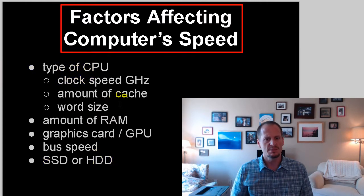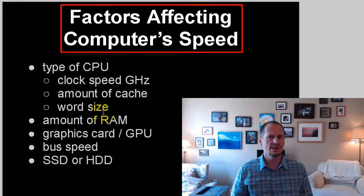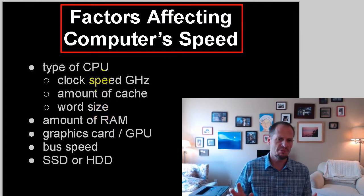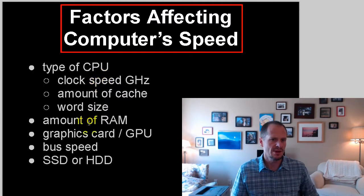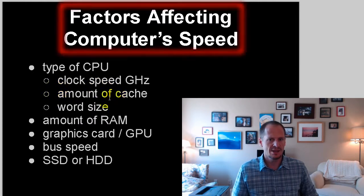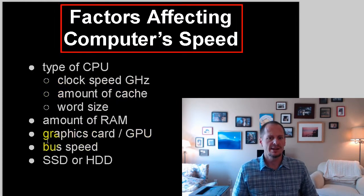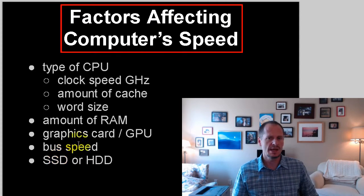What determines computer speed? The amount of RAM, solid state drive, the type of CPU, what clock speed it's running at, how much cache it has, what its word size is — these are the factors that affect computer speed. Generally speaking, when you're in the marketplace looking for a computer, the more you pay, the faster it's going to go. These components will just be better across the board if you pay more money: you'll have more RAM, a better CPU that's faster with more cache, it'll come with a graphics card, a really great motherboard with fast buses, and a solid state drive. If you pay a lot of money, you'll get all the components to make your computer fast.